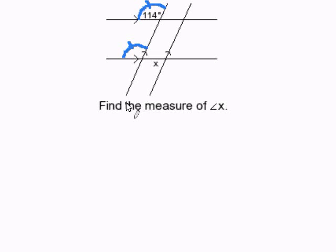Then, you can look at this line and this line and notice that they are also parallel and that this line passes through them. So by definition, this angle and this angle are also congruent to each other.